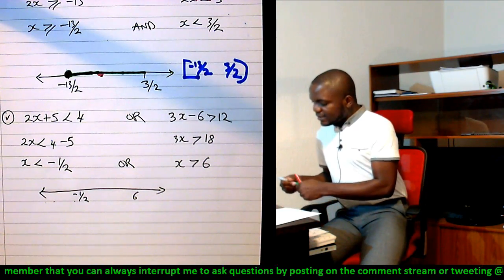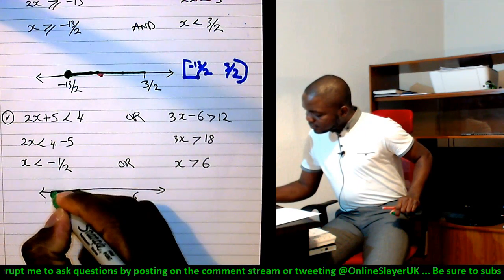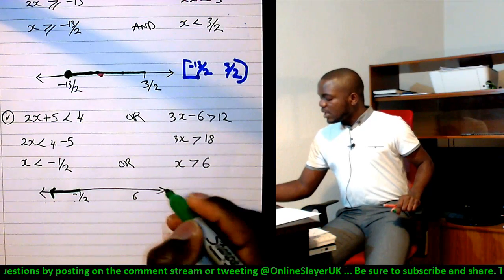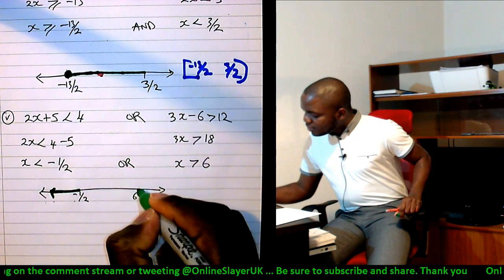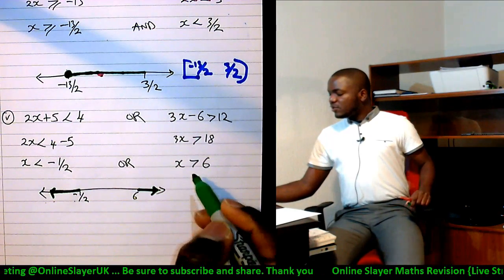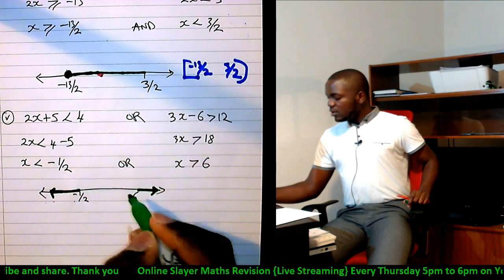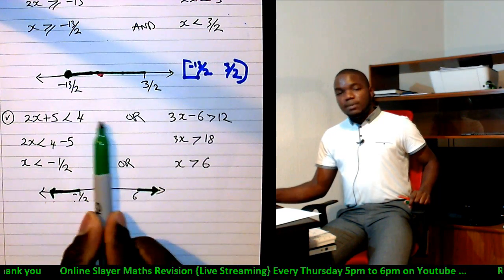Now, what does x less than minus half tell you? It says go to the left-hand side and never come back. X greater than 6 tells you go to the right-hand side and never come back. There is no equality sign, so we're not going to do any shading.